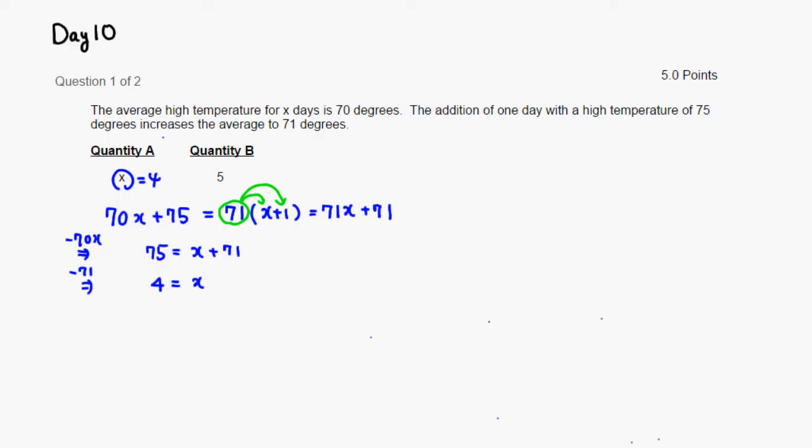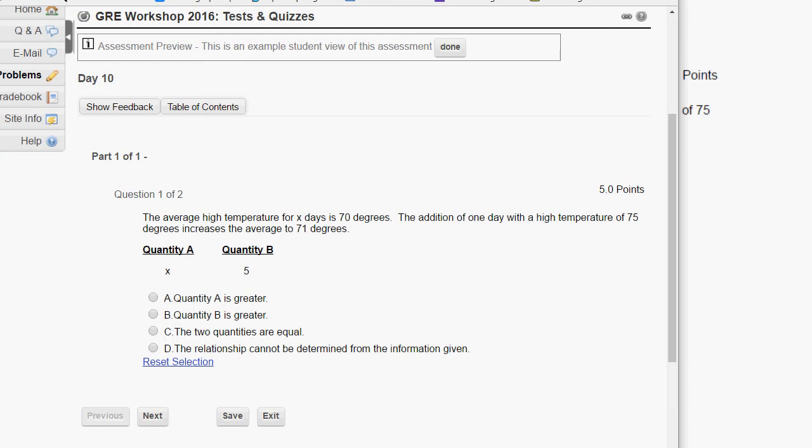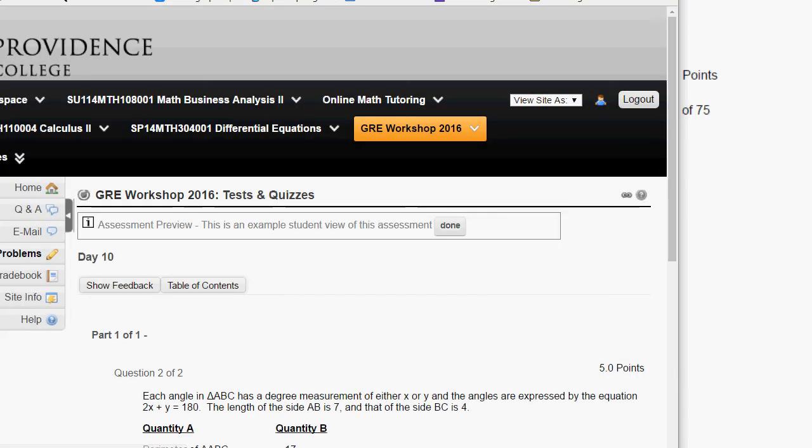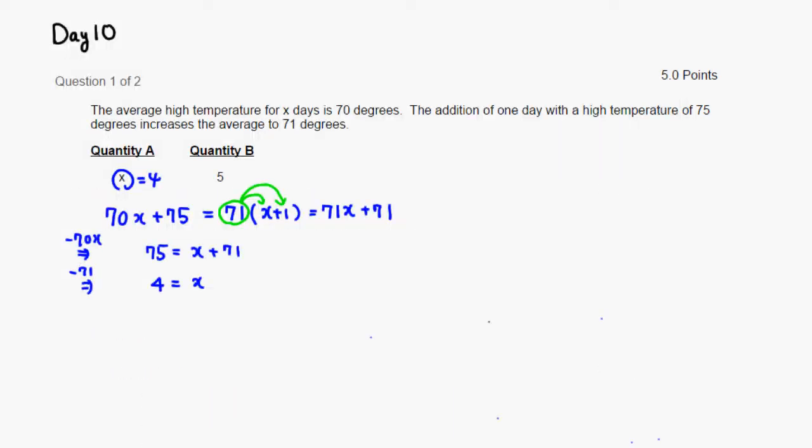So therefore quantity B is going to be larger. If you go here, B is larger. All right, so that's it. I hope that was clear.